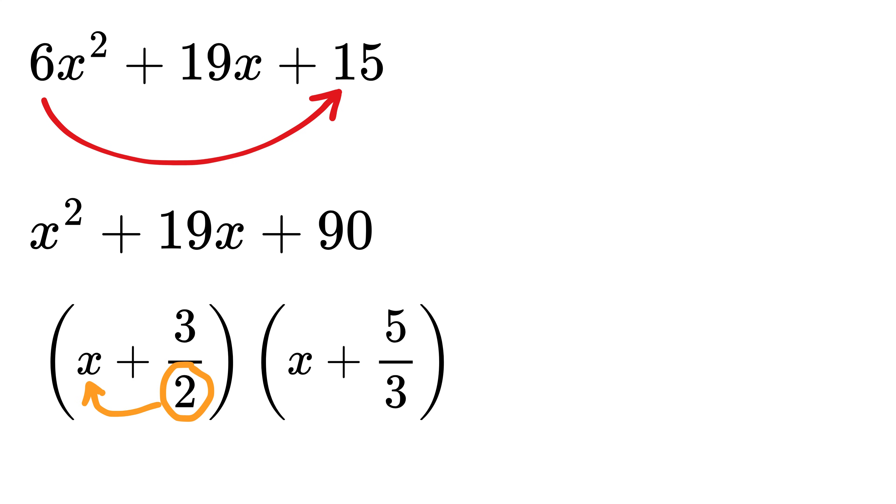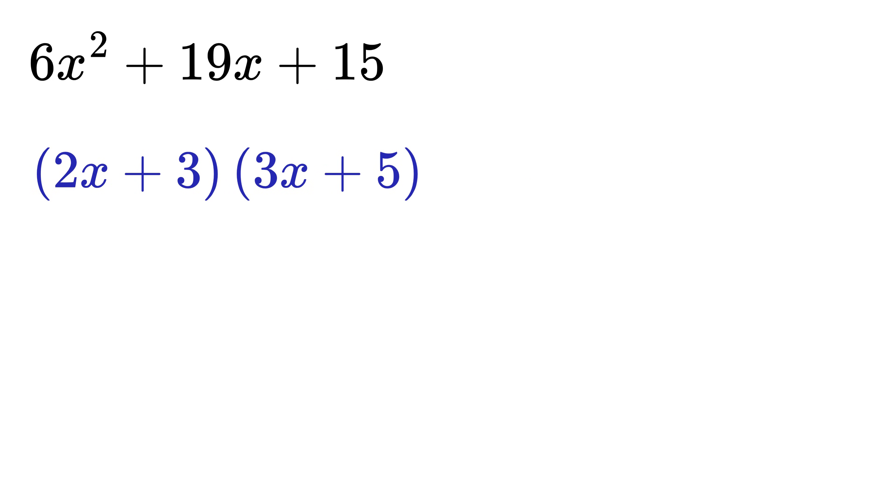As a final step, write whatever denominator is left here to get this as 2x plus 3 and remove this denominator. Do the same with this one to get 3x plus 5, and then remove this denominator, and there we go. The factors of this quadratic expression are this and this.